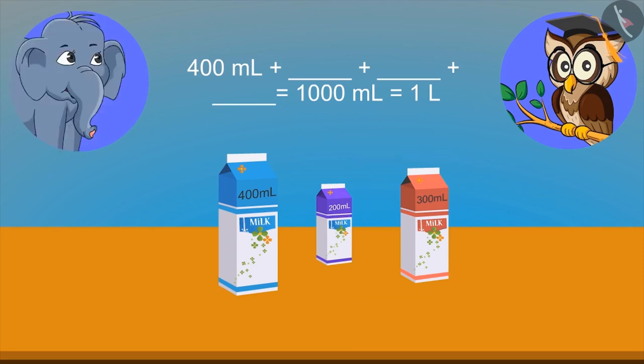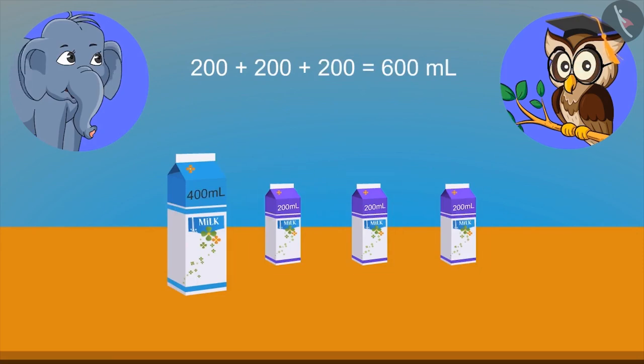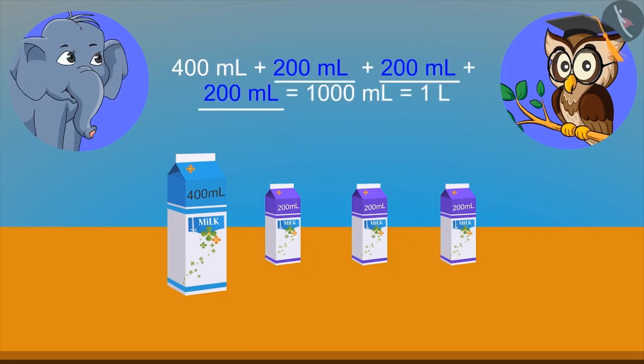I think the correct answer is 200 ml. Mixing three packets of 200 ml makes 600 ml. And mixing these 600 ml with 400 ml will make 1 litre. Yes, right.